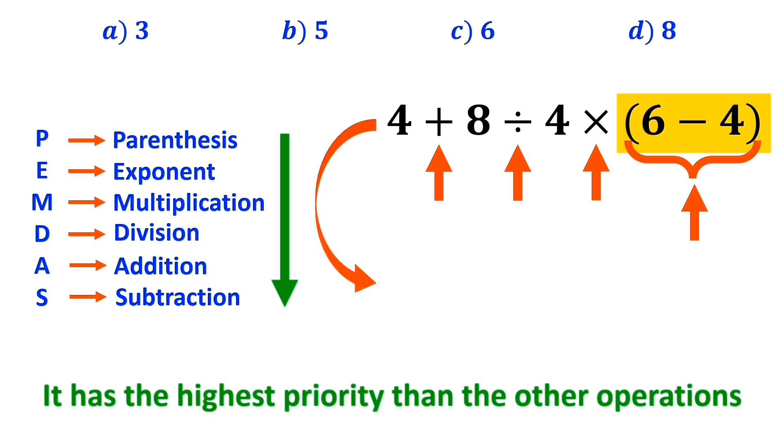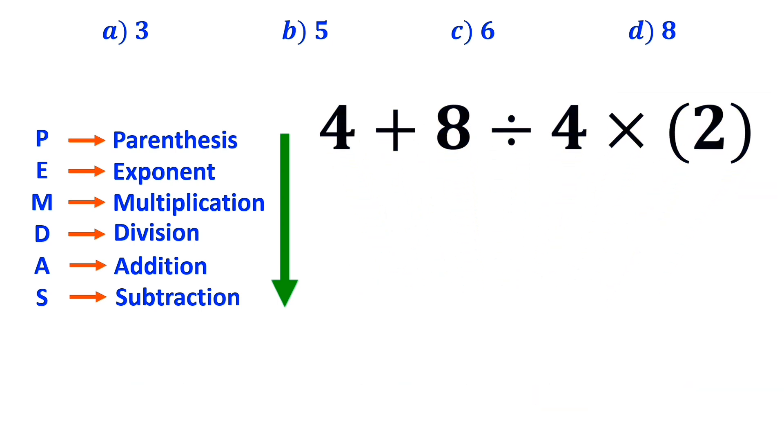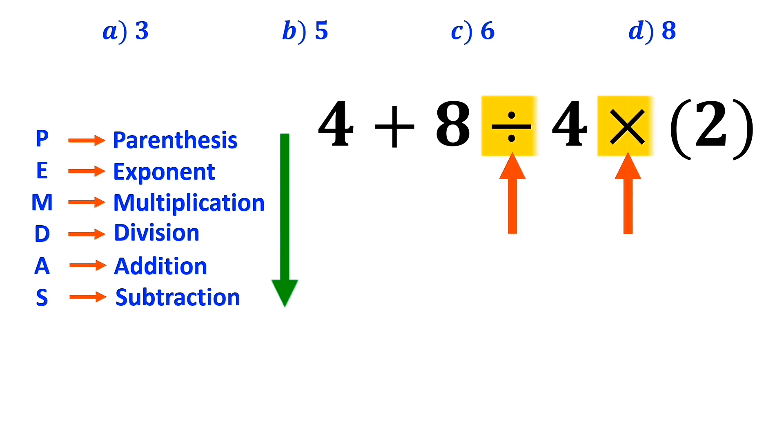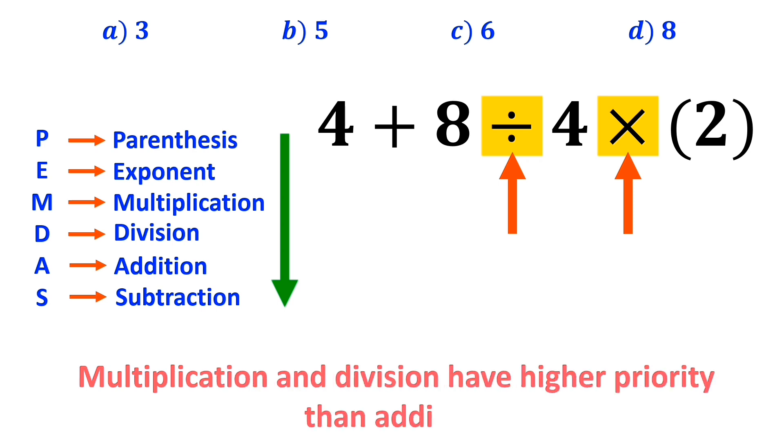So, instead of this expression, we can write 4 plus 8 divided by 4 times 2. In the next step, we need to handle the division and multiplication, because multiplication and division have a higher priority than addition.